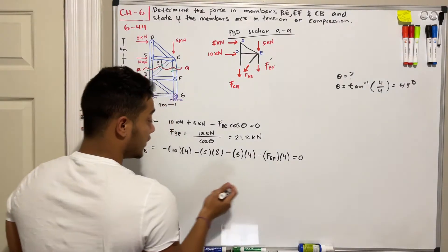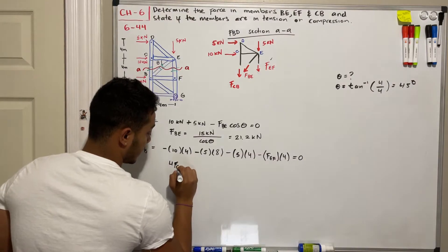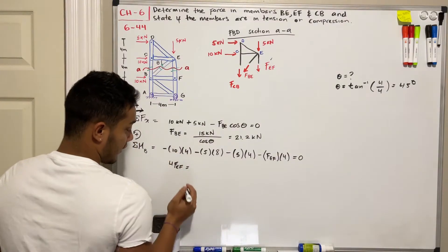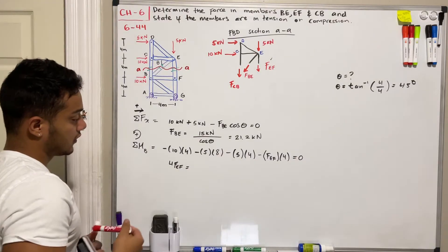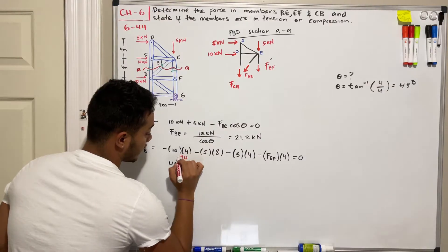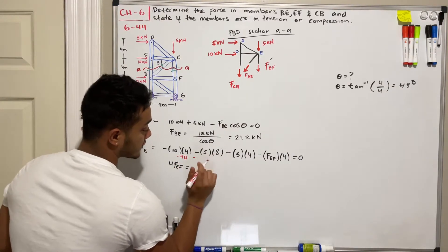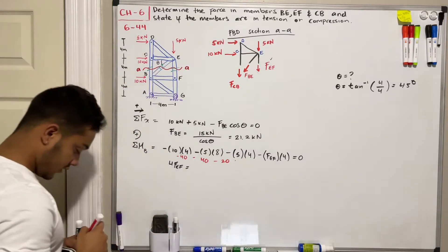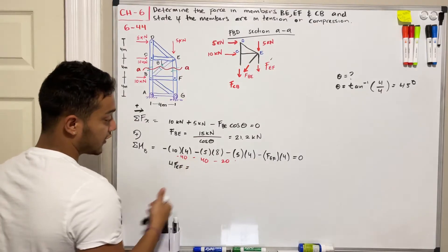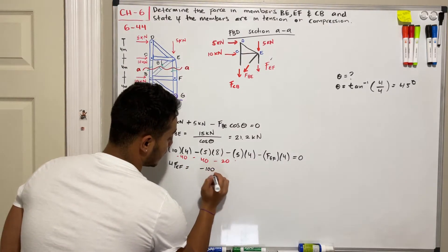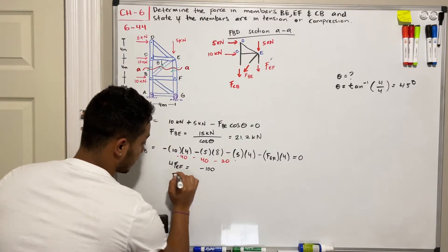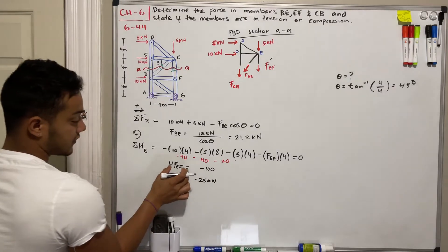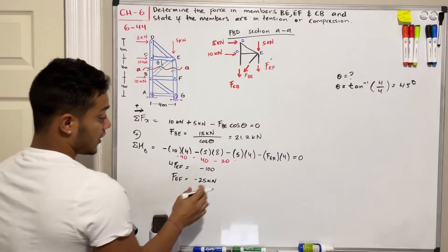Passing FEF to the other side: 4·FEF = −(10×4) − (5×8) − (5×4) = −40 − 40 − 20 = −100. Dividing by 4: FEF = −25 kN. The negative sign indicates compression.